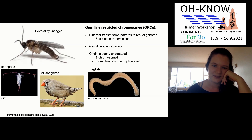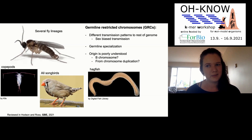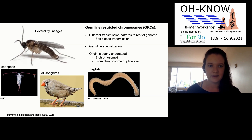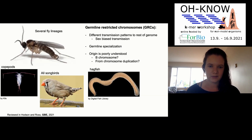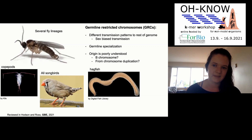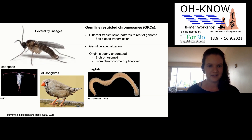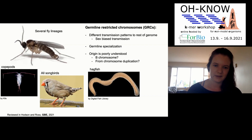Germline-restricted chromosomes are a subset of this phenomenon, in which entire chromosomes are eliminated from somatic cells early in development. I've shown pictures of a few lineages that have germline-restricted chromosomes. These chromosomes are interesting for several reasons: they often exhibit different transmission patterns, specifically sex-biased transmission; they're expected to evolve germline specialization; and their origins are generally poorly understood. There's some idea they might have evolved from B-chromosomes or chromosome duplications, but for most lineages we really don't know much about their evolution.